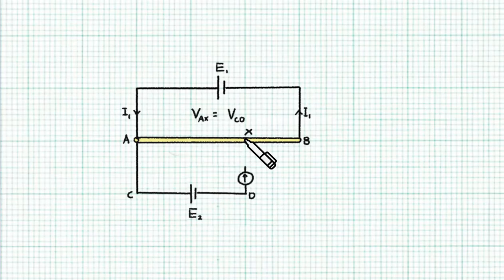So what's going to happen if we are going to tap the jockey at a position X such that before the tap is made, VAX is already equals to VCD. So we make the tap and nothing happens, right?